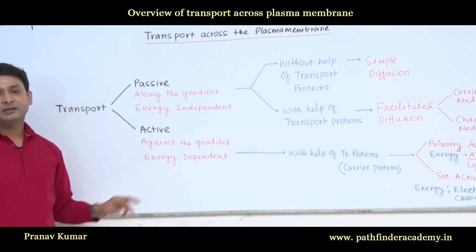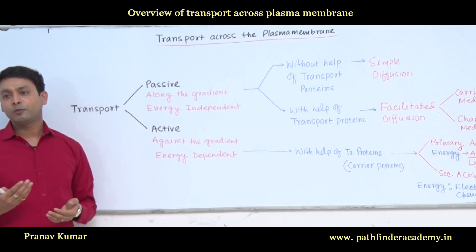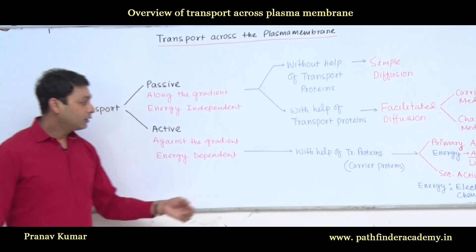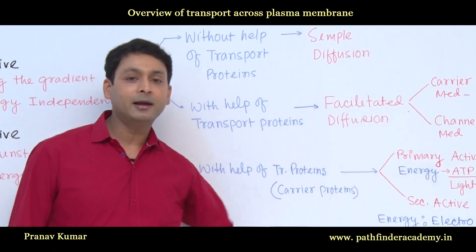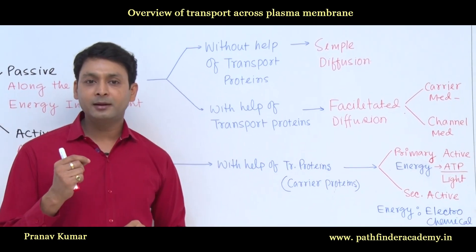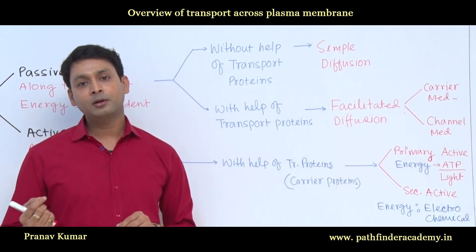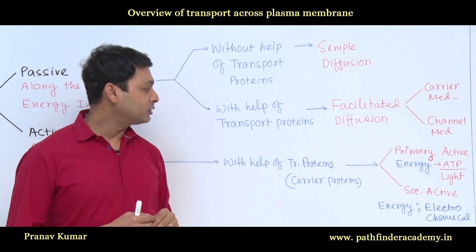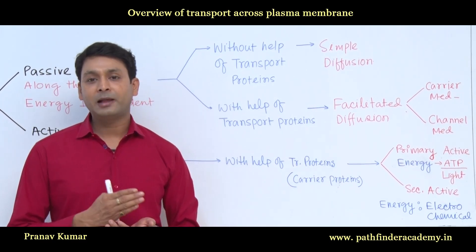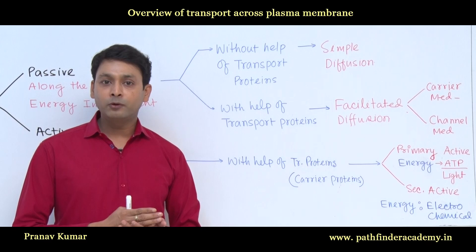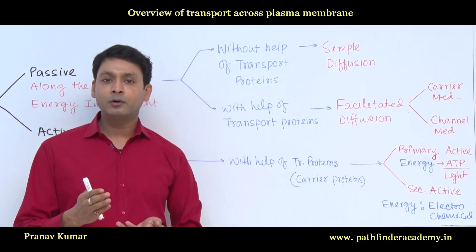Active transportation always occurs with the help of a transport protein, specifically a carrier protein. This process can be further sub-classified into primary active transportation and secondary active transportation. In primary active transportation, the source of energy is either the ATP molecule or light, and it is considered direct transportation. The carrier protein involved can be a uniporter or a co-transporter, and the co-transporter can be an antiporter or a symporter.